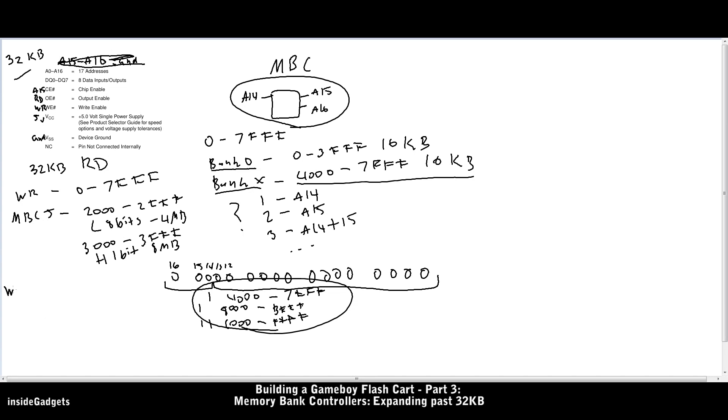So what this means is, to change banks, all we do is pulse WR. We set the address as 2000 to 2FFF, and then we set the data bit as whichever bank we want to change, so 1 in this example. And it's as simple as that; the second bank will change.